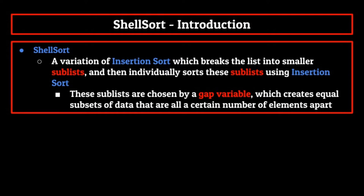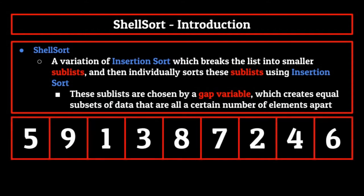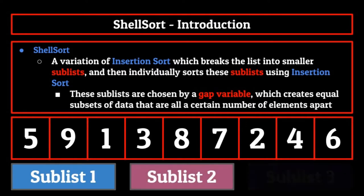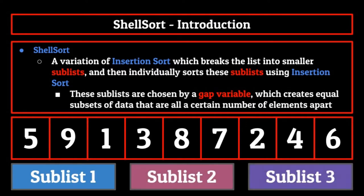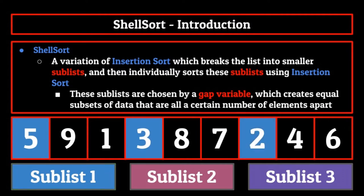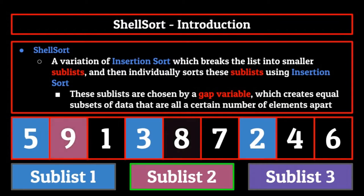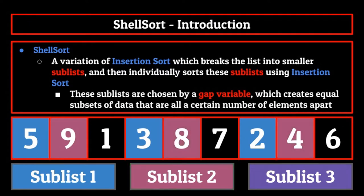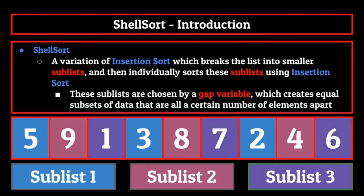Say we had a list like so, and we wanted to break the list up into three sublists, each containing elements that are three positions away from each other. For example, the first sublist consists of the elements at index locations zero, two, and four. These elements would create the first sublist. Then the second sublist would consist of the elements at index locations one, three, and five. Finally, the third sublist would consist of the elements at index locations two, four, and six. Using this process, we have now broken up the list into three smaller sublists, each with elements that are equidistant apart from each other.